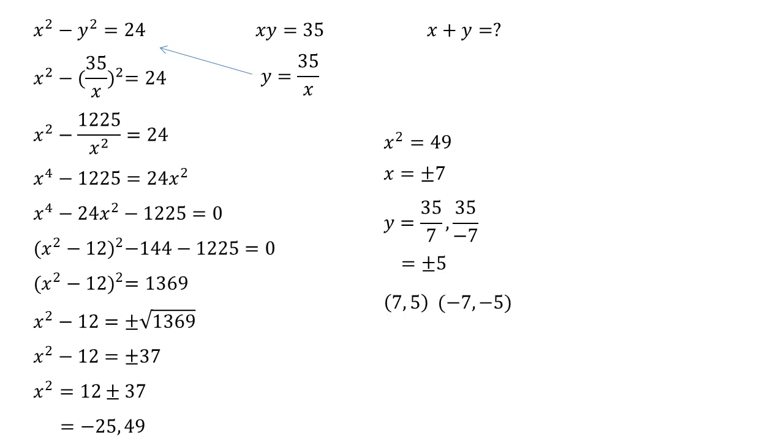So we get the pairings x equals 7, y equals 5 and x equals minus 7, y equals minus 5. If we add them together 7 plus 5 is 12, minus 7 plus minus 5 is minus 12. So the solutions from here are x plus y equals plus or minus 12.